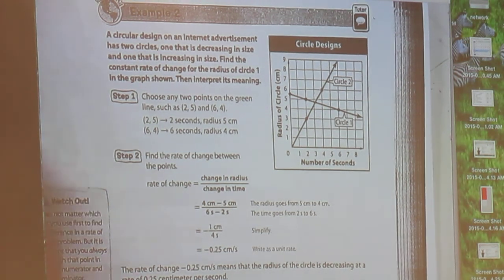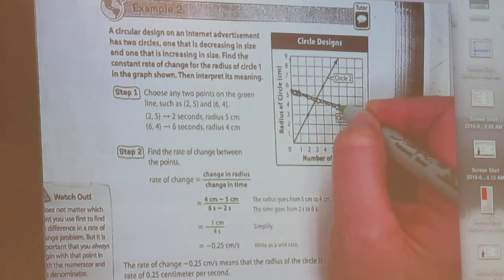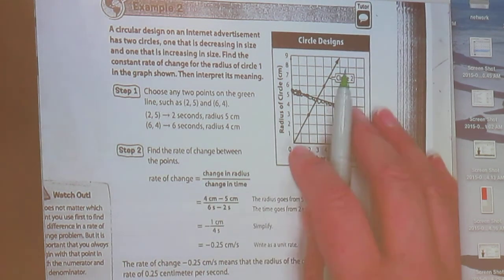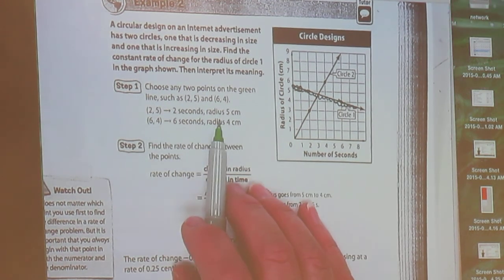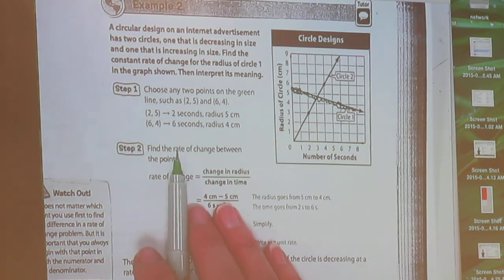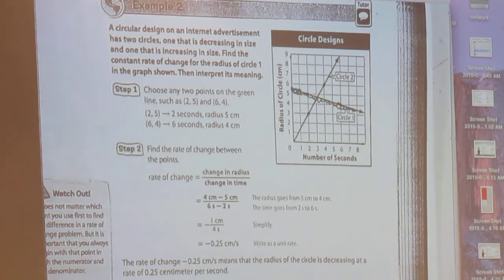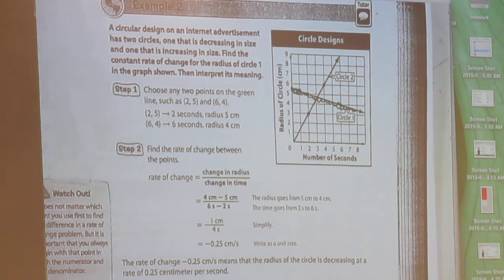So the green line, and I'll help you with this, is actually the one that comes down in this direction. And then the other line is where you also have two points. So they have 2, 5, which is 2 seconds with a radius of 5 centimeters, and 6, 4, which is 6 seconds with a radius of 4 centimeters. And what are they talking about here? A circular design on an internet advertisement has two circles, one that's decreasing in size and one that's increasing in size. Find the constant rate of change for the radius of circle 1 in the graph shown. Then interpret its meaning. So circle 1 is the green line.